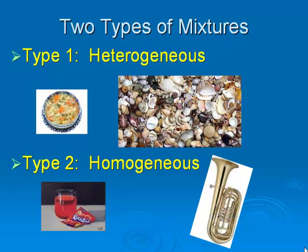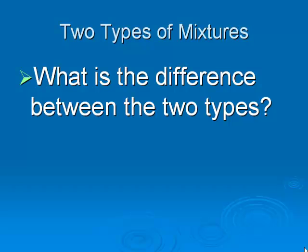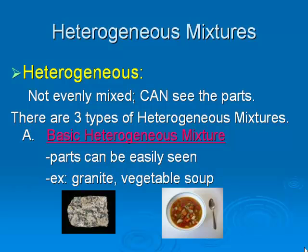Mixtures are divided into two categories: they are either heterogeneous or homogeneous. The basic difference between these two types is that in heterogeneous mixtures, you can see the parts. Heterogeneous mixtures are divided into three categories. The first category we're going to call basic — the parts are very easily seen and they're very large.